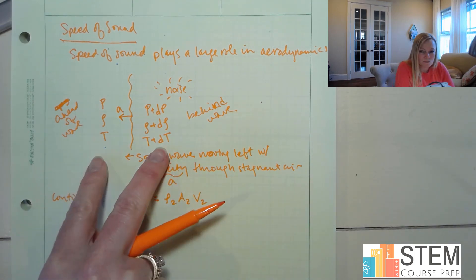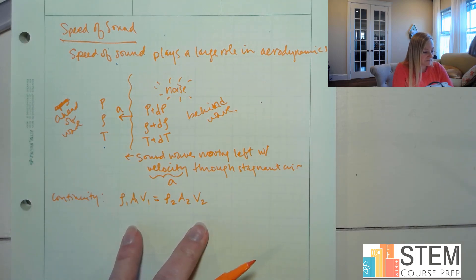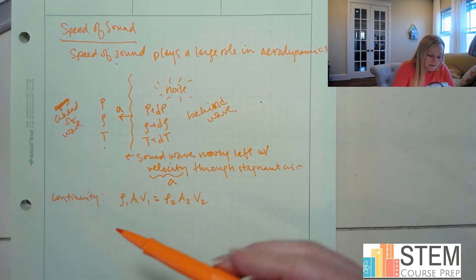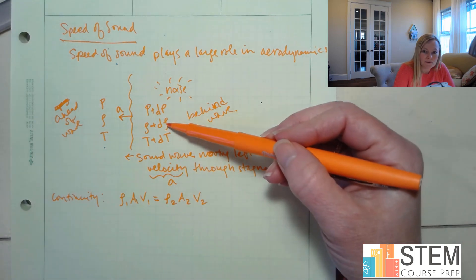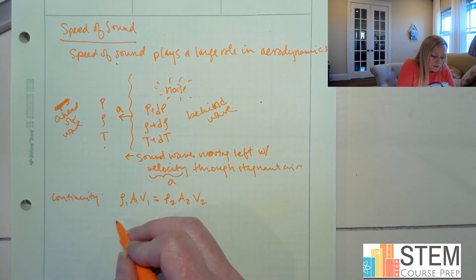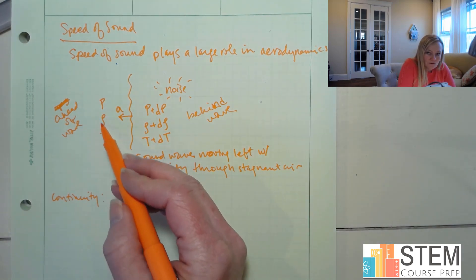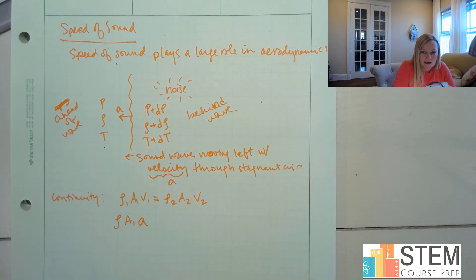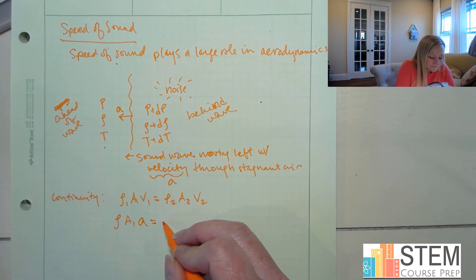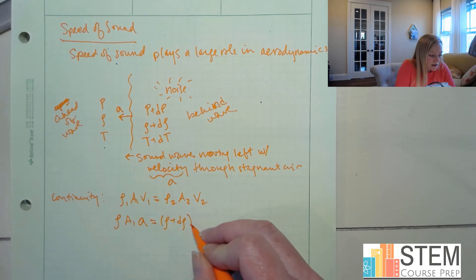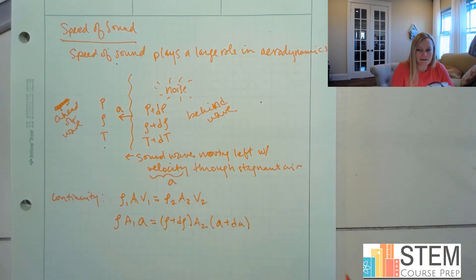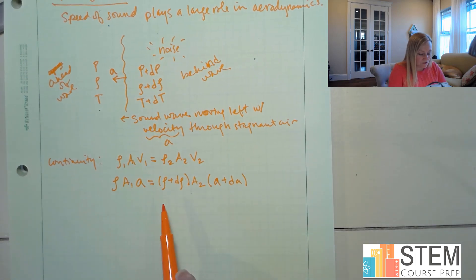So just note that the sound wave causes us to have a change in those parameters. Now what we need to do is derive an equation for A. We're going to start off with our continuity equation — that's conservation of mass. If we go from one point to the other, we're going to have rho_1 * A_1 * V_1 = rho_2 * A_2 * V_2.